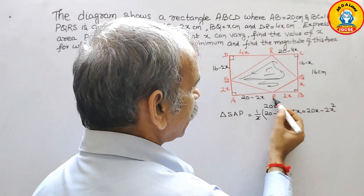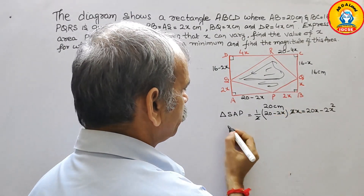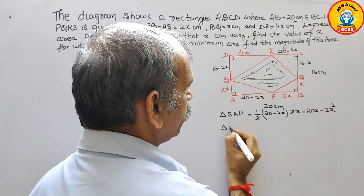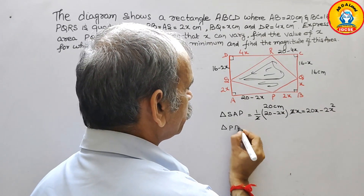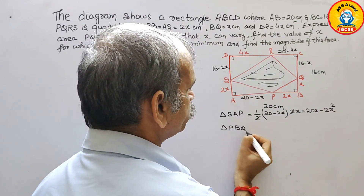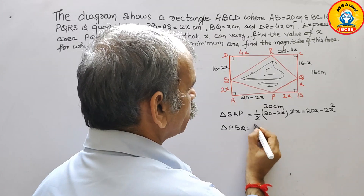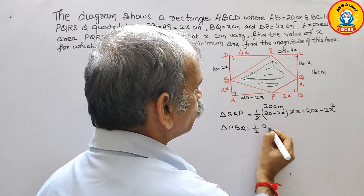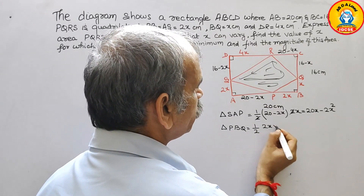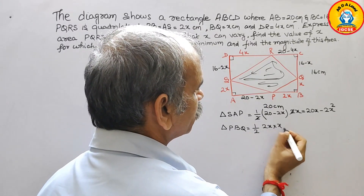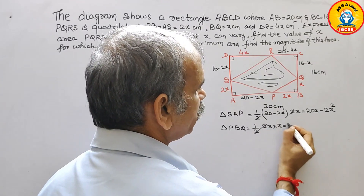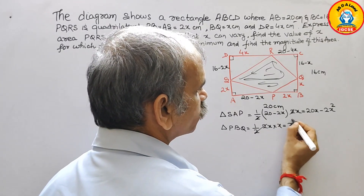Next, triangle PBQ. Its area equals half × 2x × x. The 2 cancels, giving x².